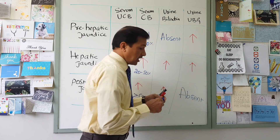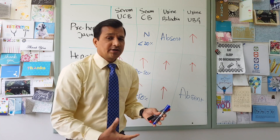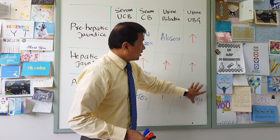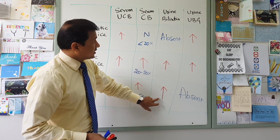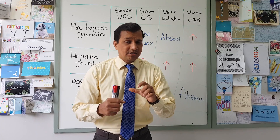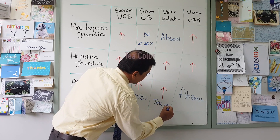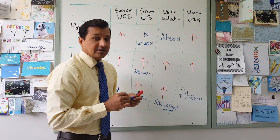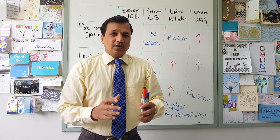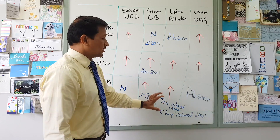Urine urobilinogen is absent and stool urobilinogen is also absent in post-hepatic jaundice. This means stool color will be clay-colored or pale. Urine color, although urobilinogen is absent, is tea-colored because bilirubin itself is present in the urine. So in obstructive jaundice you will see tea-colored urine and clay-colored stool — these are the two key findings to look for in post-hepatic jaundice.